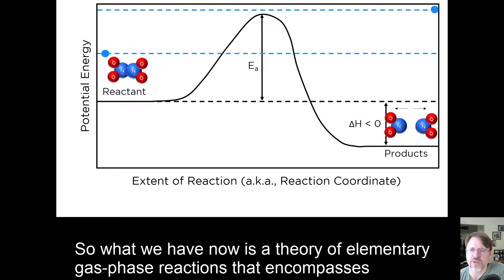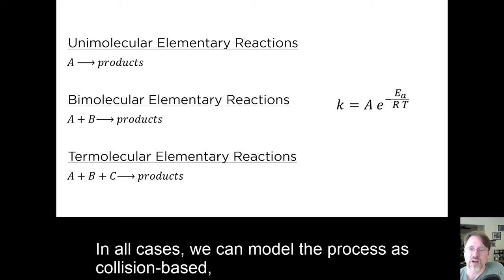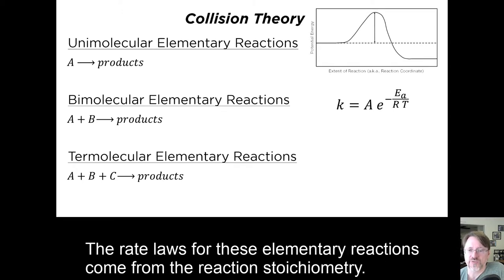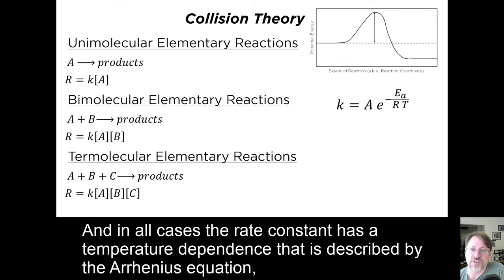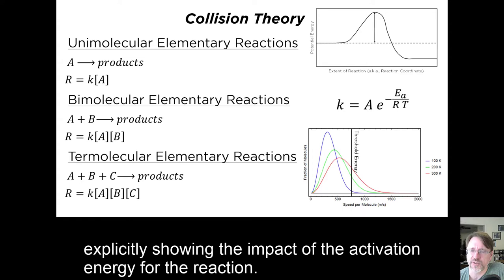So what we have now is a theory of elementary gas phase reactions that encompasses unimolecular, bimolecular, and termolecular processes. In all cases, we can model the process as collision-based, where the resulting reactants have enough energy to pass over an activation barrier. The rate laws for these elementary reactions come from the reaction stoichiometry, and in all cases, the rate constant has a temperature dependence that is described by the Arrhenius equation, explicitly showing the impact of the activation energy on the reaction.